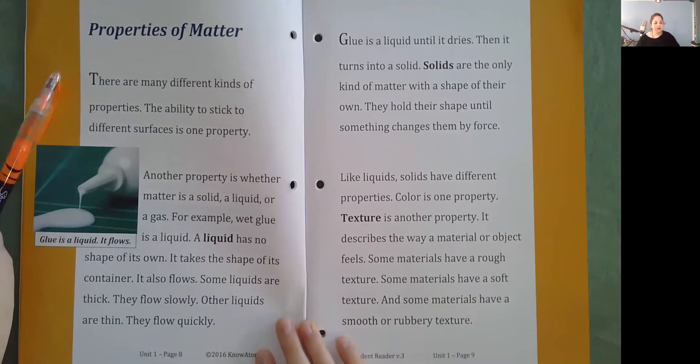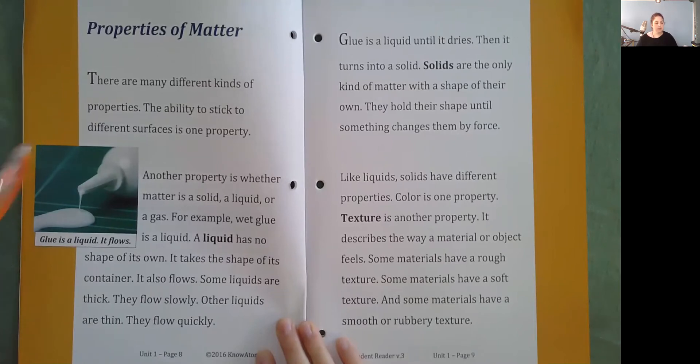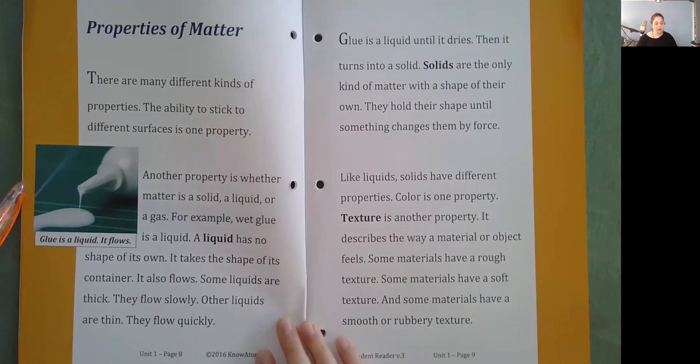There are many different kinds of properties. The ability to stick to different surfaces is one property. Another property is whether matter is a solid, a liquid, or a gas. For example, wet glue is a liquid. A liquid has no shape of its own. It takes the shape of its container. It also flows.